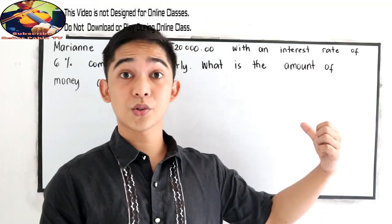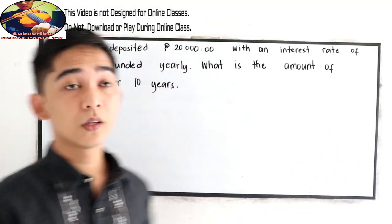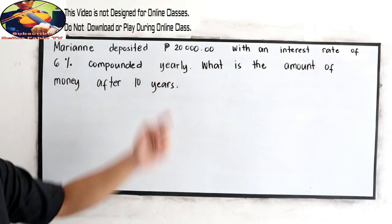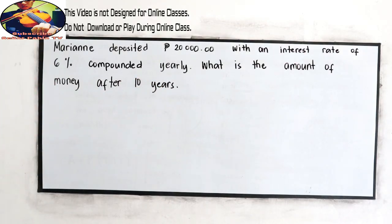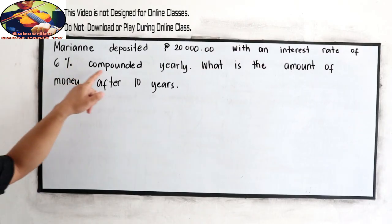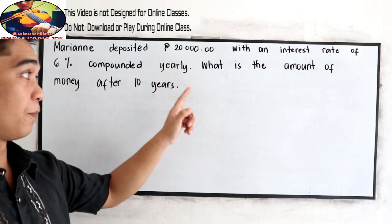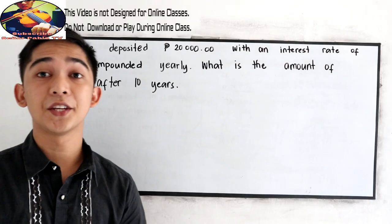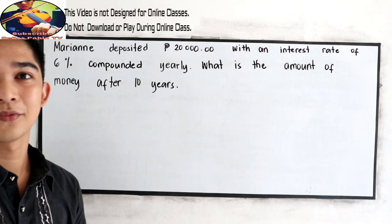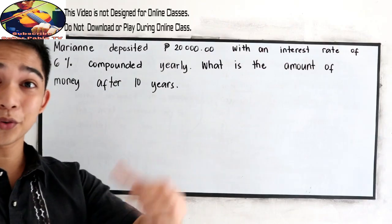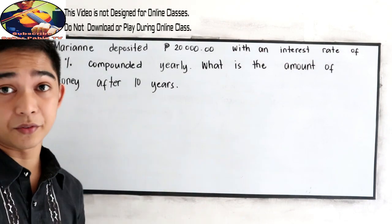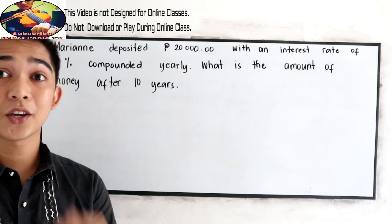Now I want you to solve this problem. Marianne deposited 20,000 with an interest rate of 6% compounded yearly. What is the amount of money after 10 years? If you want to try our problem, pause the video. Then after answering resume watching to check your answers.